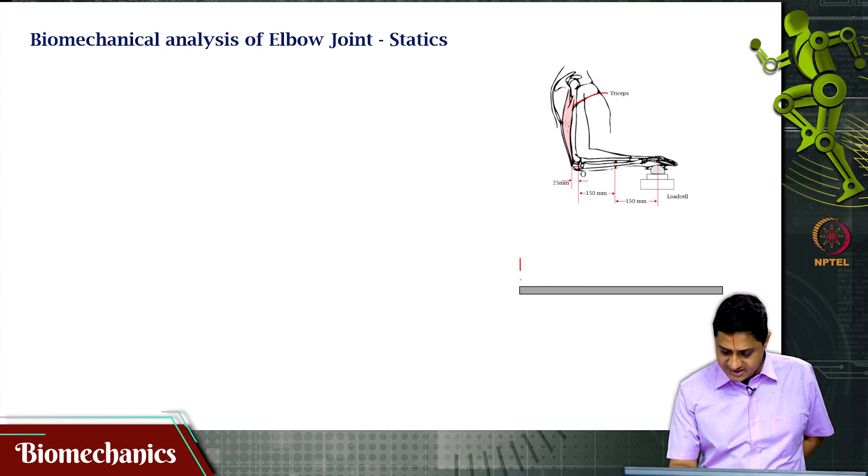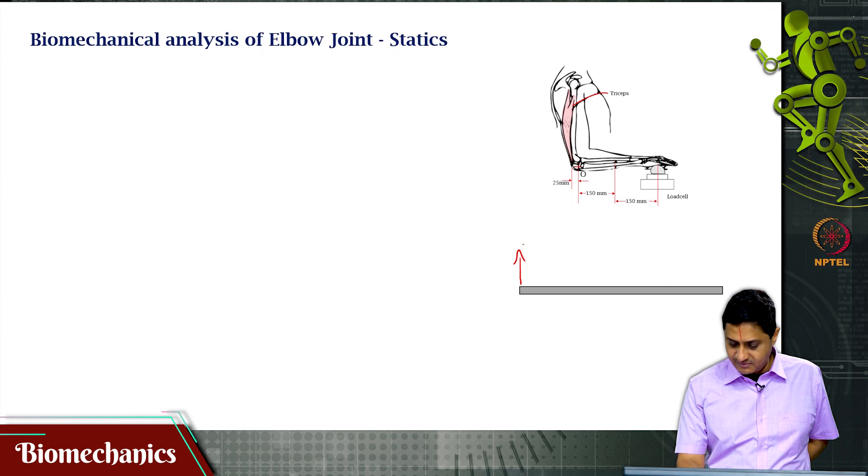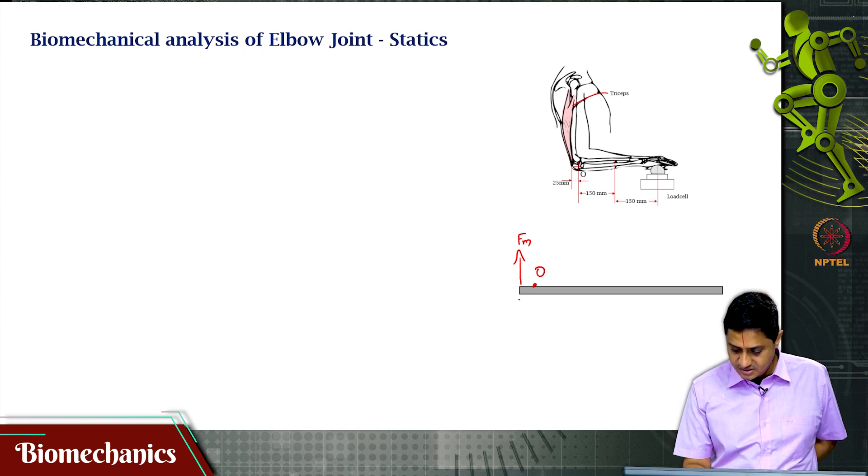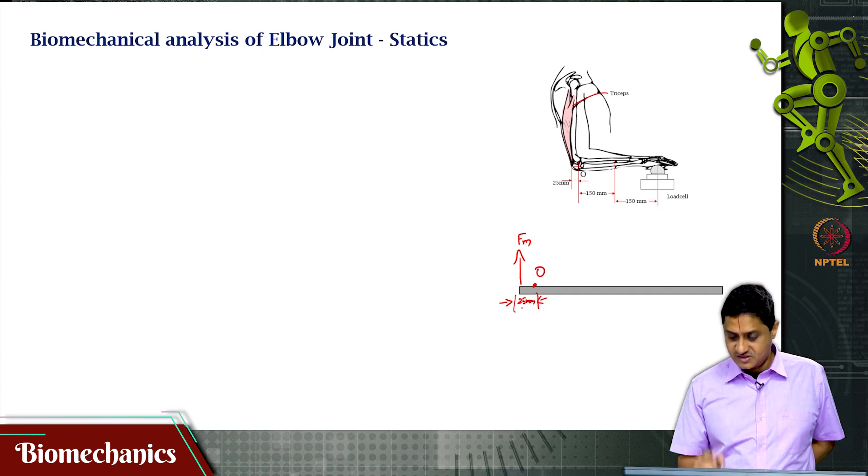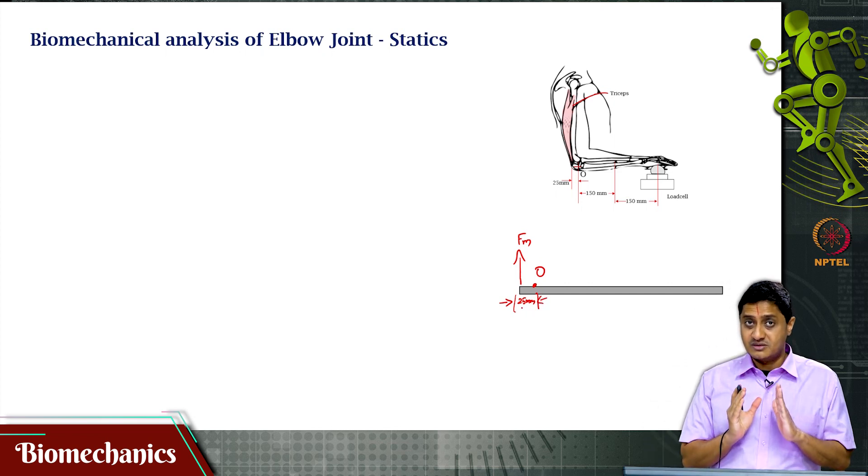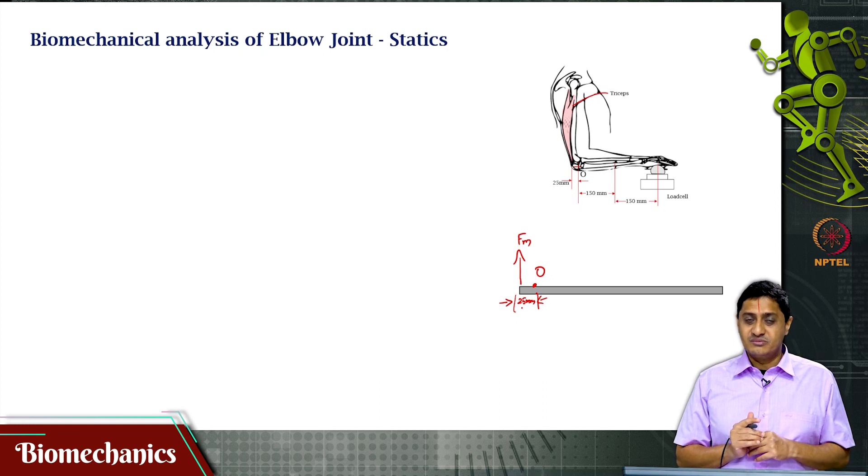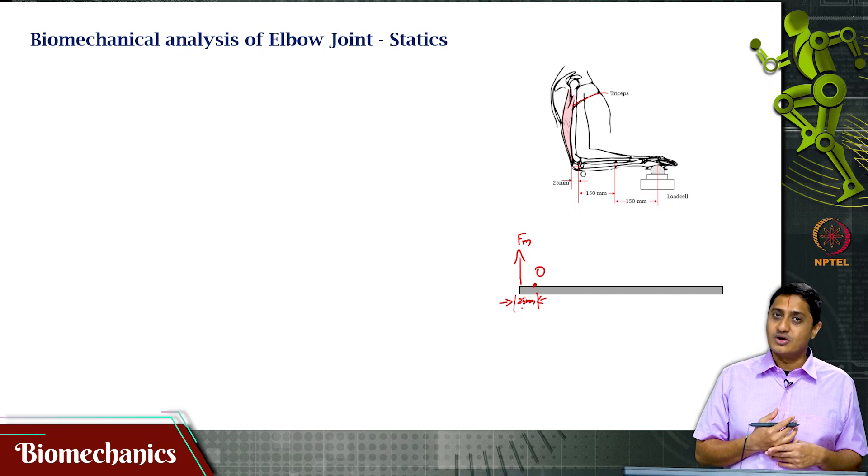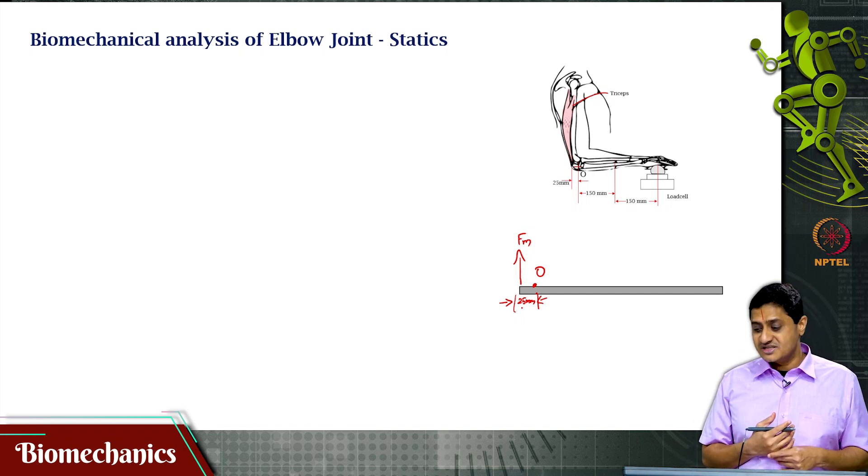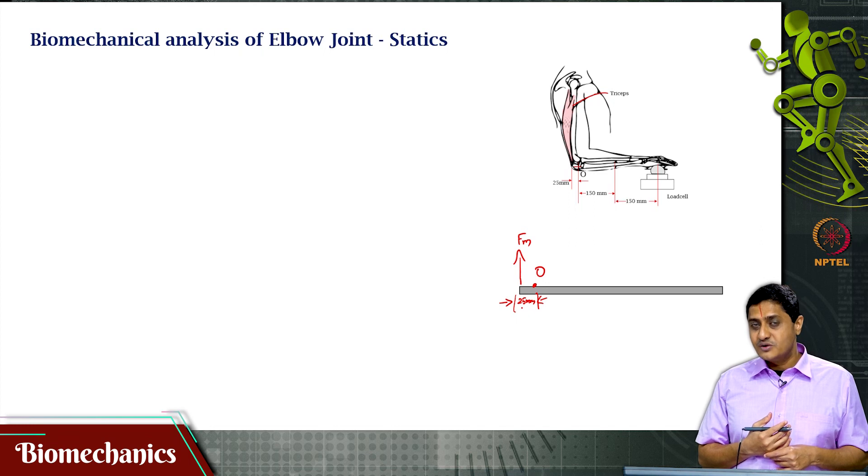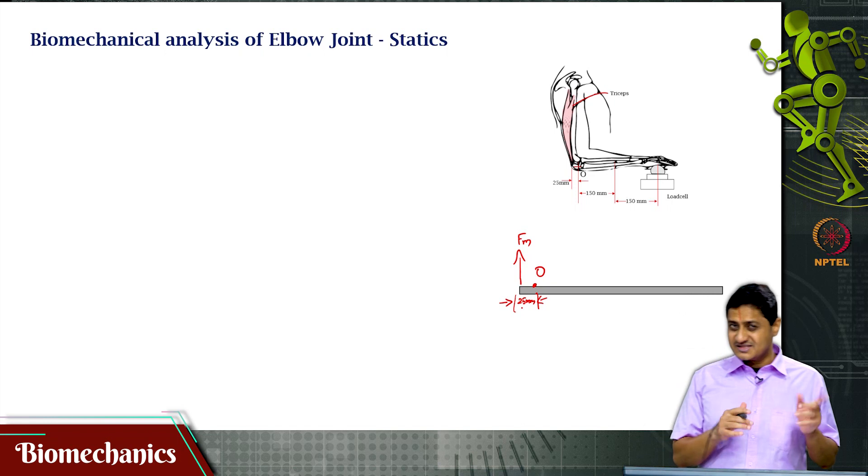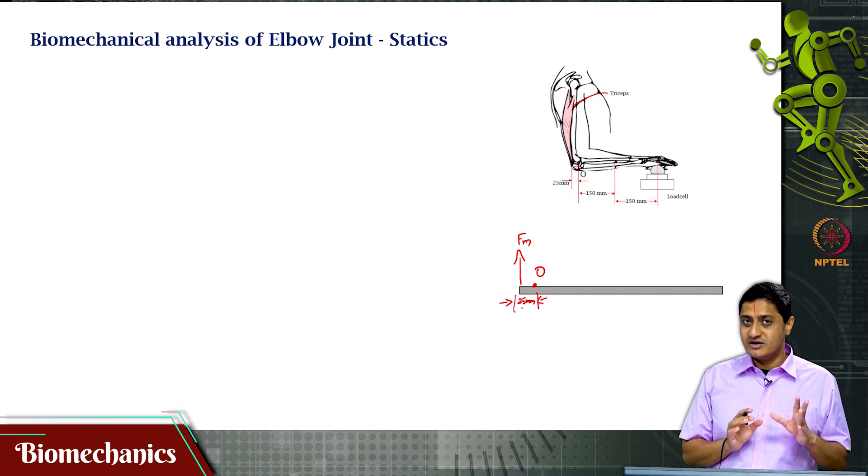The muscle is acting here. That force is what I am interested in finding. I am going to call this F_m. And this is O, the origin or the elbow joint. That distance is 25 mm, very important. The distance between the elbow joint and the point of insertion. Remember the distal attachment of the muscle is called insertion. The proximal attachment is called origin.